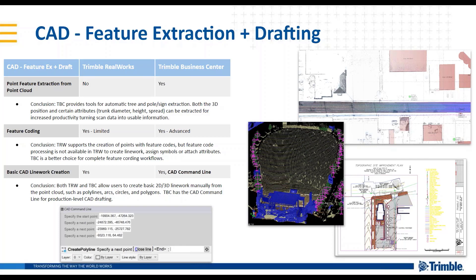Today TBC allows for automatic tree, pole, and sign extraction. The recently released version 5.30 added an automatic pole and sign extraction routine. This is really handy because it can save you a lot of time picking out attributes. We can find things like the tree trunk diameter, canopy diameter, drip line diameter, the 3D position of the center of the pole on the ground, or the pole diameter.